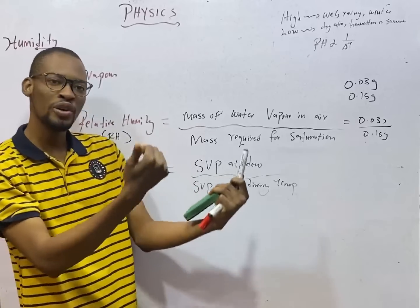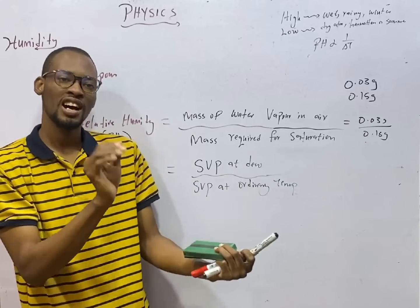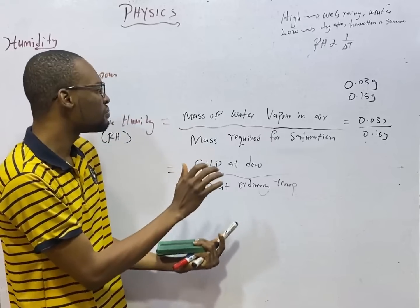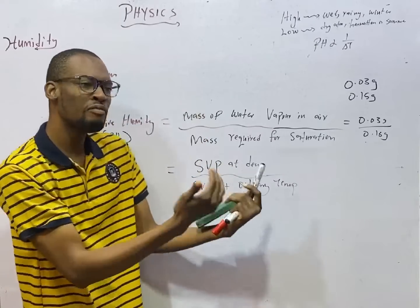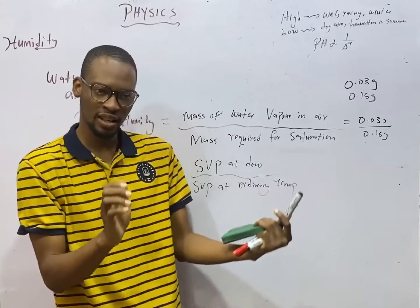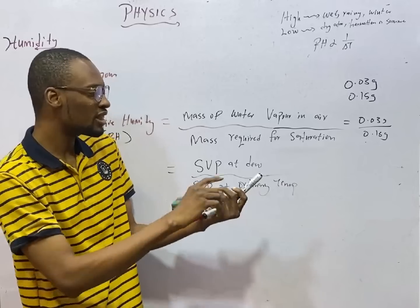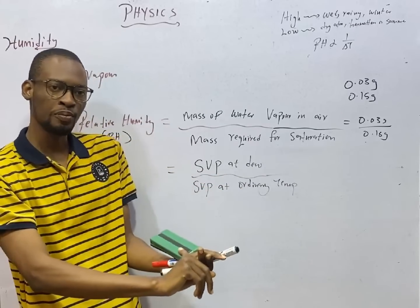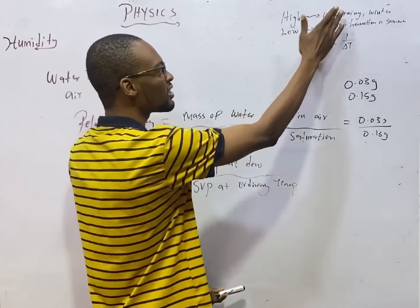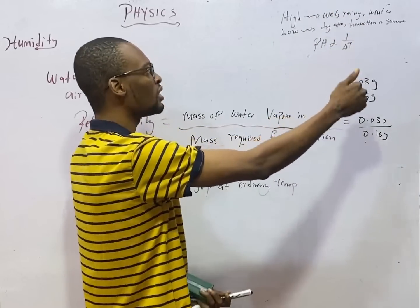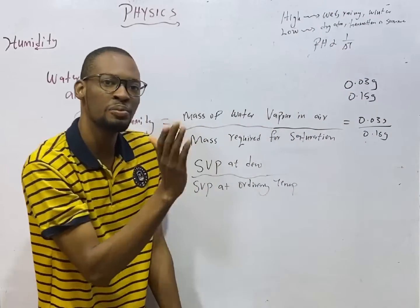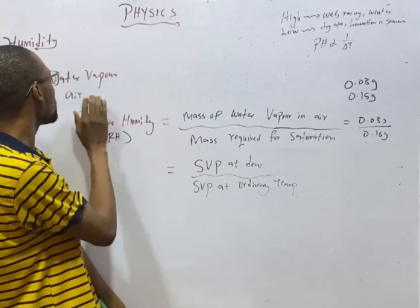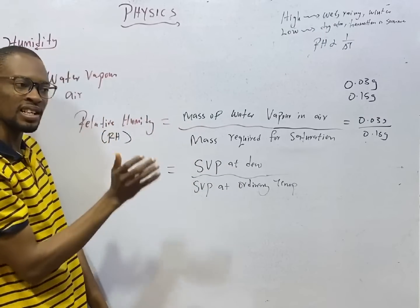We can have low humidity and we can have high humidity. High humidity means we have more water vapor in air than required. As such, you can experience rain, wet season, and winter. Wet period, rainy season, and winter are examples of high humidity, because humidity is a measure of water vapor present in air.